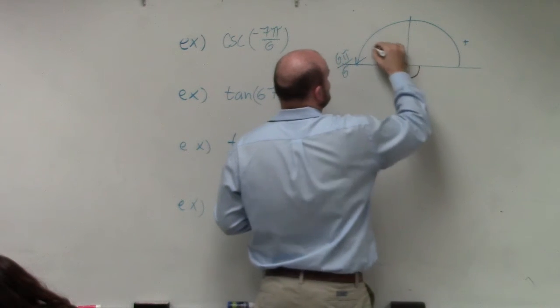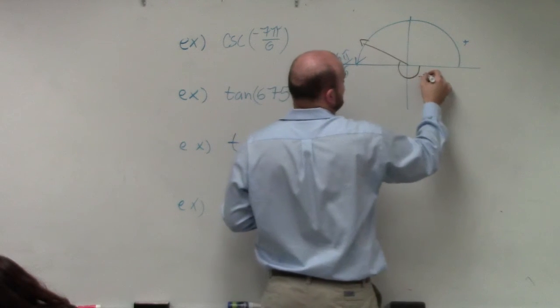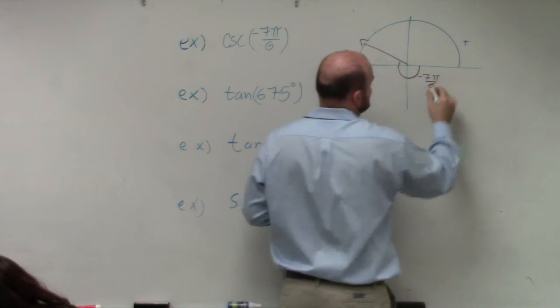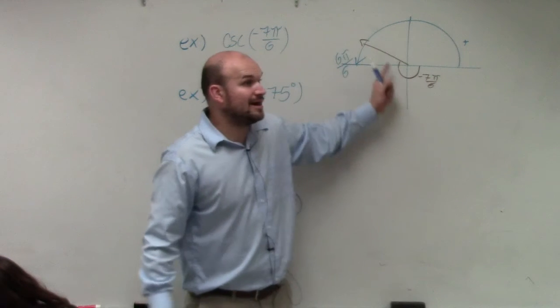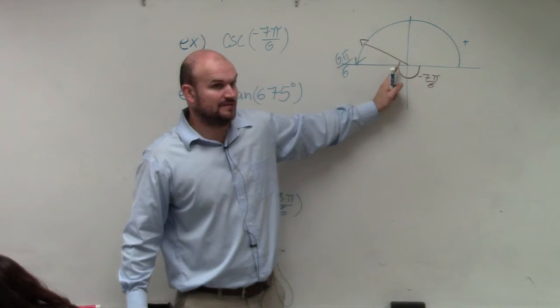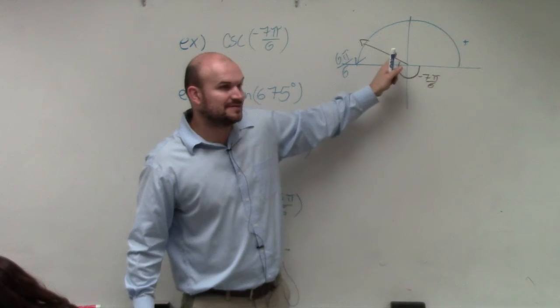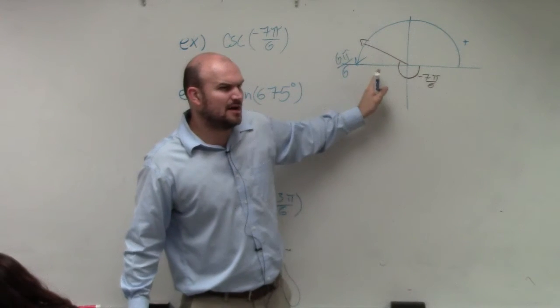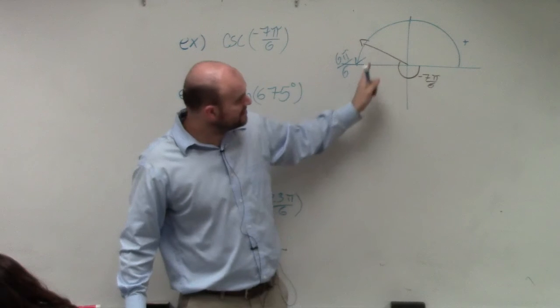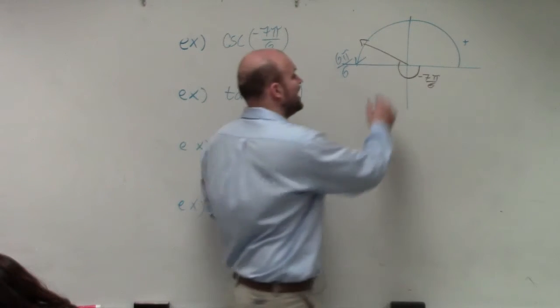So therefore, I can say that this angle would be negative 7π over 6. Because we know halfway around would be 6π over 6 in the negative direction, so I have to go one more π over 6. That means this reference angle is how much? How far is this reference angle? π over 6.